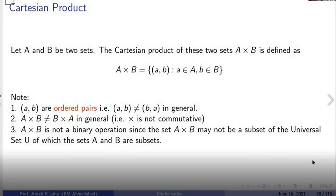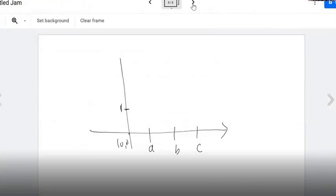Also, this is not really a binary operation. A and B are subsets of the universal set U. A cross B is a set which is derived from these sets, A and B, but it's not a subset of the universal. So therefore, A cross B, this operation is not a binary operation.